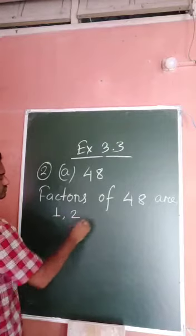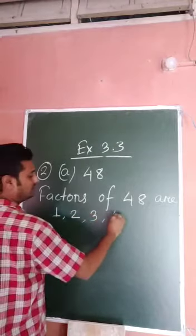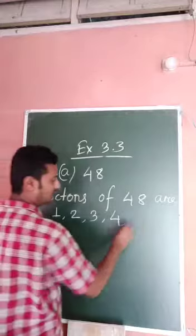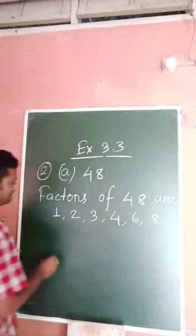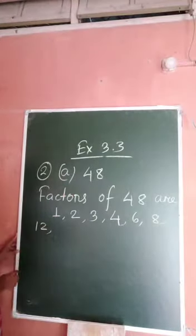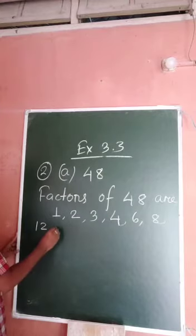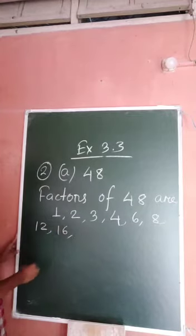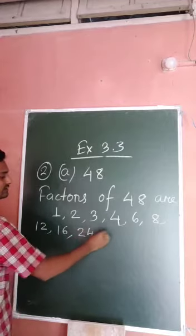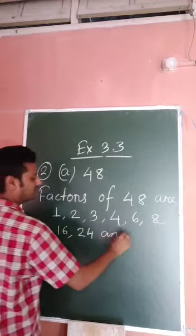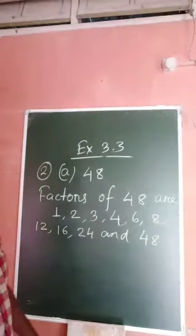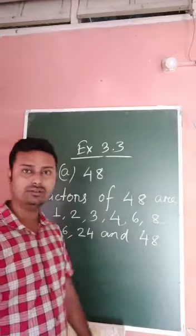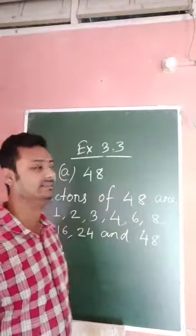The factors of 48 are: 1, 2, 3, 4, 6, 8, 12, 16, 24, and 48. Factors means the numbers by which the given number is divisible.